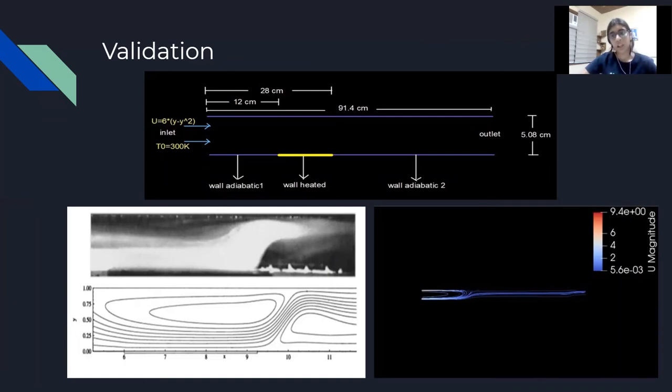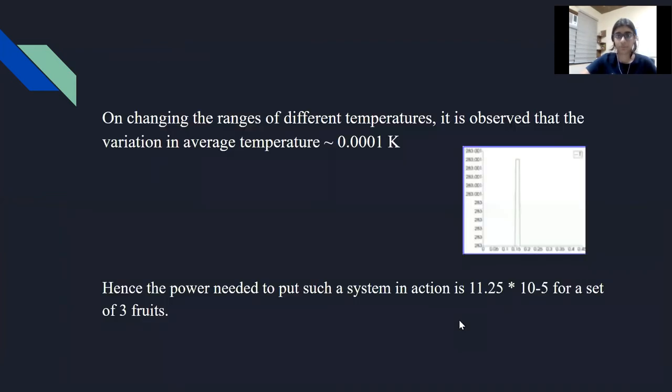Now, generally for solving in OpenFOAM, we have to validate a case for which we already have data existing in some paper. This is because we want to ensure that our solvers and our boundary conditions are completely correct according to what we are going to solve and the results do not already exist. The validation case which we chose was a channel having a heated portion in its wall and these are the results from the paper and we generated the flow and got the streamlines and as we can see they are quite comparable.